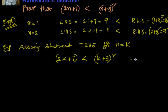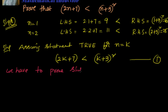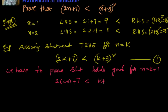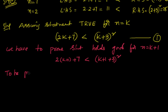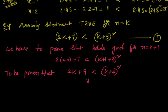Now if we assume that this is true, what we have to prove? We have to prove that the statement holds good for n equal to k plus 1. How it looks like for n equal to k plus 1: I will have 2 into k plus 1 plus 7 is less than k plus 1 plus 3 whole square. So I have to prove that 2k plus 9 is less than k plus 4 whole square, or 2k plus 9 is less than k squared plus 8k plus 16. This is what we have to prove.